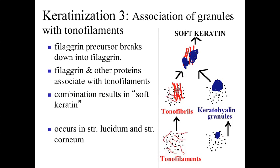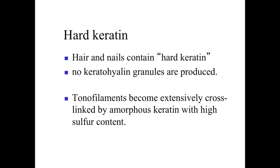The final process of keratinization is that filaggrin precursors break down to give filaggrin, which together with other proteins and the materials within the keratohyaline granules and tonofibrils combines to produce a soft form of keratin. This occurs within the stratum lucidum, so by the time cells push up into the stratum corneum they have a very strong keratin-filled cytoplasm. A similar process occurs in hair and nails, but instead of soft keratin, hard keratin is formed — it is more highly cross-linked and contains much more sulfur, giving the hardness of a nail rather than the flexible strength of the outer skin surface.